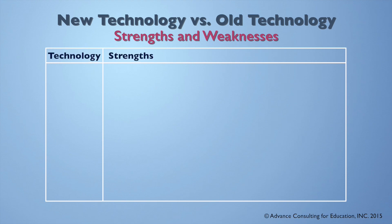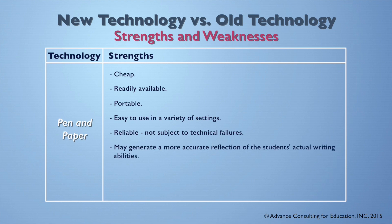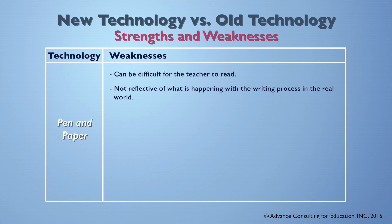Now let's look at the strengths of the comparative old technology, pen and paper. Its strengths are: it's cheap, readily available, portable, easy to use in a variety of settings, more reliable, and not subject to technical failures. It may generate a more accurate reflection of the student's actual writing abilities, and it's more difficult — though not impossible — for students to copy someone else's work. The weaknesses of pen and paper are that it can be difficult for the teacher to read, and it's not reflective of what is happening with the writing process in the real world.